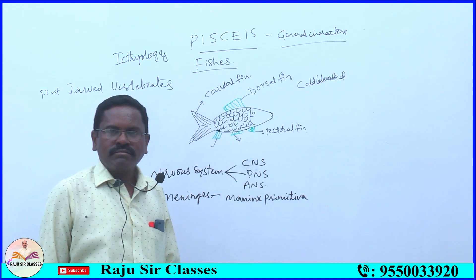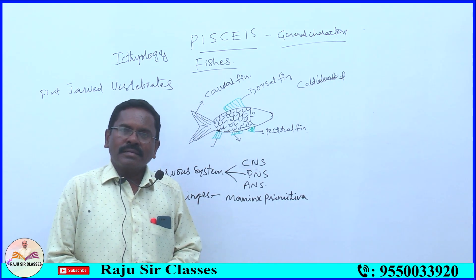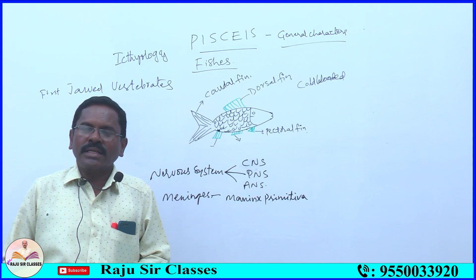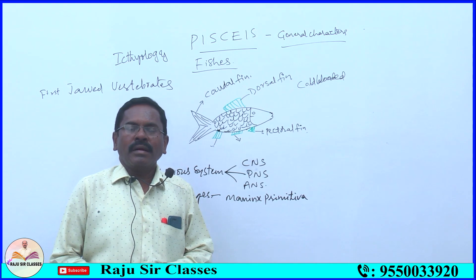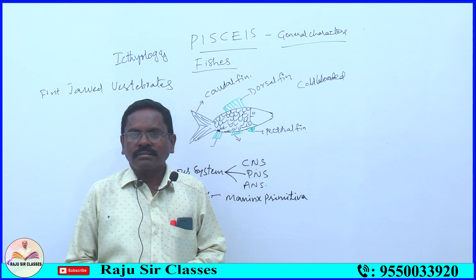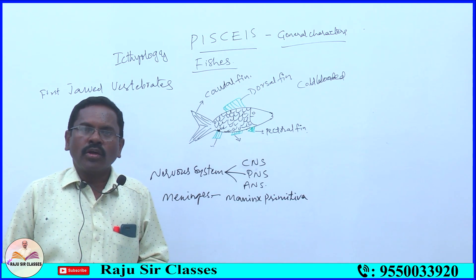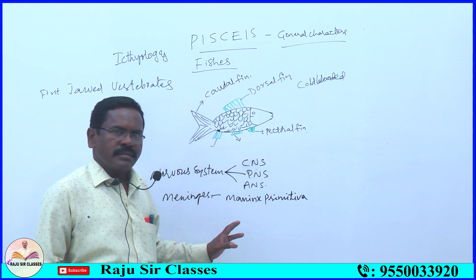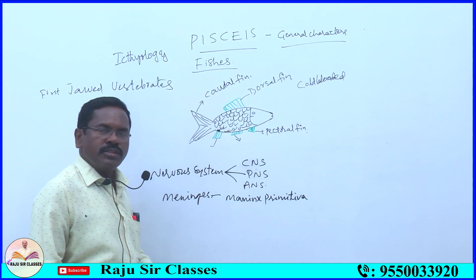In fishes, only one meninges layer is present. In amphibians, the brain is covered by two layers — outer dura mater and inner pia mater. In amphibians and reptiles, two layers are present. In birds and mammals, three layers are present: outer dura mater, inner pia mater, and middle arachnoid. In fishes, the brain is covered by only one meninges layer — meninges primitiva.